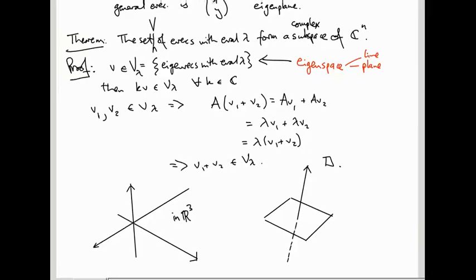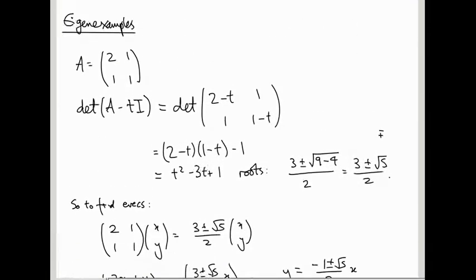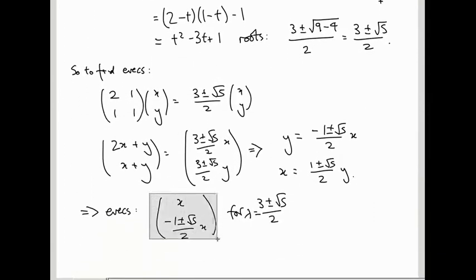So let's go right back to this Arnold-Cat map example that we did last time. Here. 2, 1, 1, 1. We figured out its eigenvectors. They were x, minus 1 plus or minus root 5 over 2 x. So that's two lines in the plane.